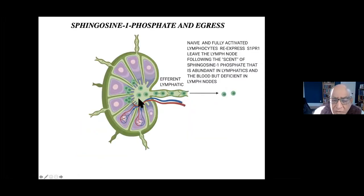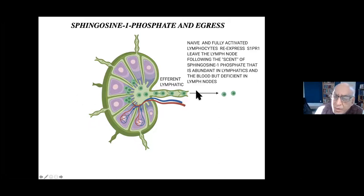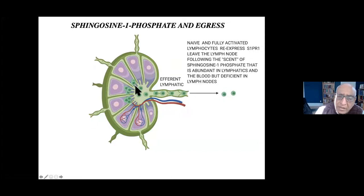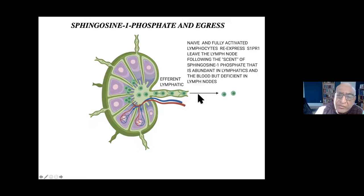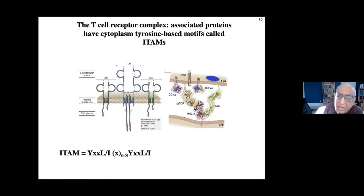Once the T cell is activated, when it first came into the lymph node it downregulated the receptor for sphingosine 1-phosphate, a lipid molecule present in the blood and efferent lymphatics. After activation, the T cell re-expresses the sphingosine 1-phosphate receptor and is drawn out of the lymph node into the efferent lymphatic by following the sphingosine 1-phosphate gradient. The lymphocyte then migrates into the tissue to deal with the pathogen that activated it.